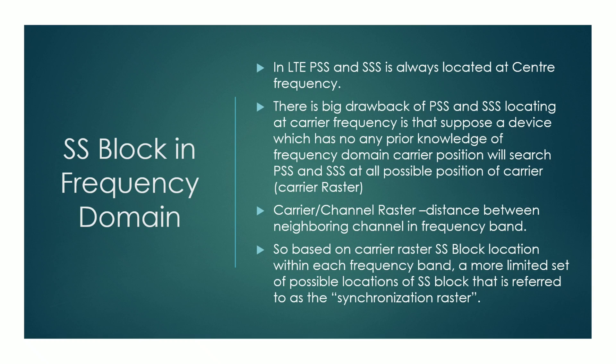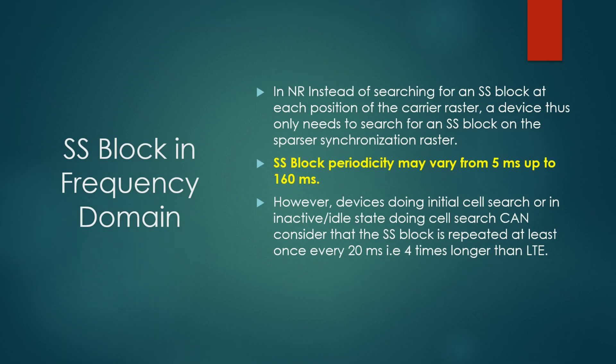We first define carrier raster and channel raster: it is the distance between two neighboring channels in a frequency band. Based on the carrier raster, the SS block location within each frequency band has a more limited set of possible locations, referred to as the synchronization raster. In NR, instead of searching for an SS block at each and every position of the carrier raster, a device will search the SS block at the synchronization raster.